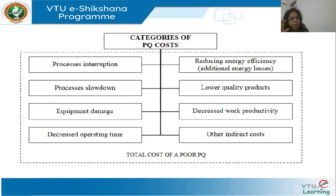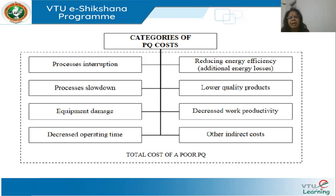From a managerial perspective, it is not very easy to define the issues with power quality. Decreased work productivity is another factor — if the motor shuts down and 10 people on the shop floor have no work but are still being paid, that's a wasteful expenditure. And there are many other indirect costs: repair, maintenance due to poor quality, and so on. All these categories have to be analyzed before arriving at the cost of power quality disturbances at a particular premise.